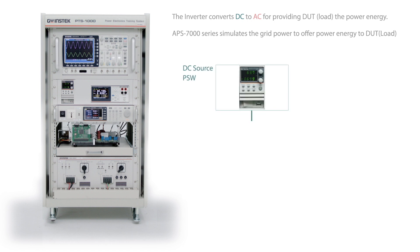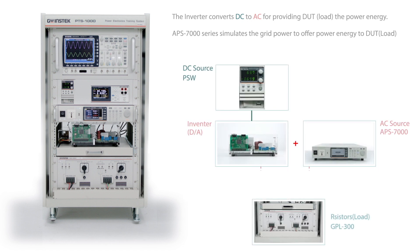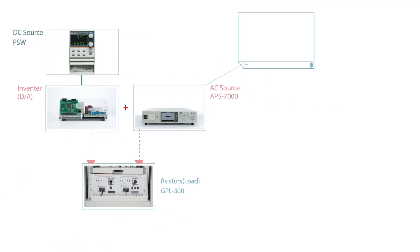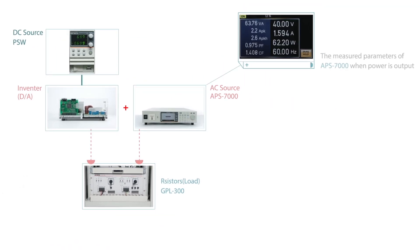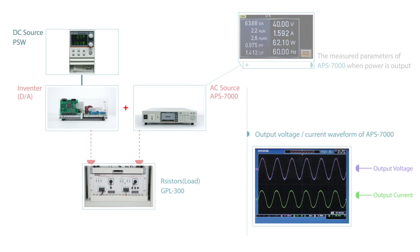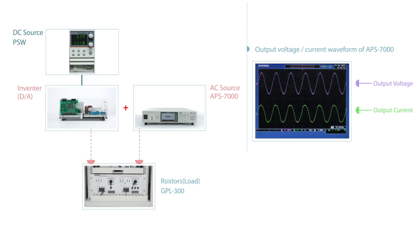The APS-7000 simulates grid power to provide power energy to loads, while a DUT inverter transfers from DC to AC to provide power energy to loads at the same time. This is used to simulate grid power output and allows inverters to do the test of connecting in parallel with the grid power.